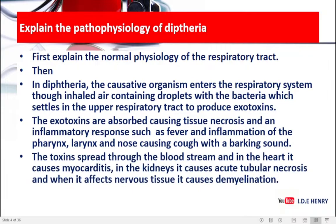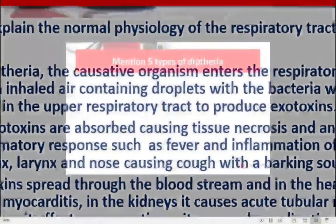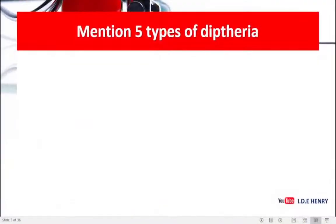The toxins spread through the bloodstream. In the heart, it causes myocarditis. In the kidneys, it causes acute tubular necrosis. And when it affects the nervous system, it causes demyelination. That is a short summary of the pathophysiology.